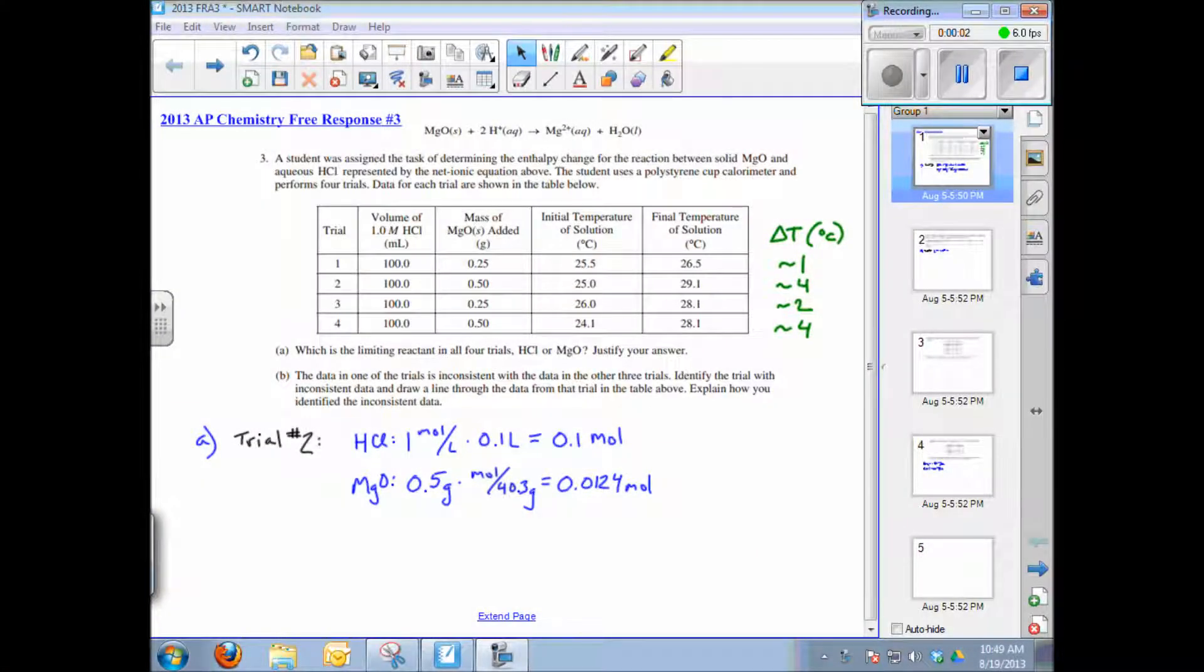This video tutorial will solve AP Chemistry free response question number three from the 2013 exam. A student was assigned the task of determining the enthalpy change for the reaction between solid magnesium oxide and aqueous hydrochloric acid. He uses a coffee cup calorimeter and does four trials. The data are in the data table.